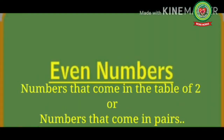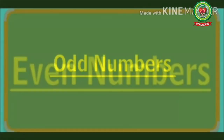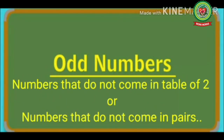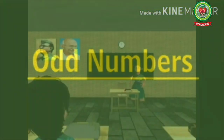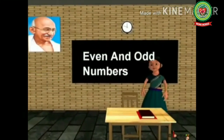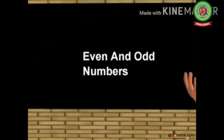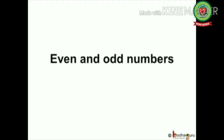Even numbers are those numbers that come in the table of two, or the numbers that come in pairs. Odd numbers are the numbers that do not come in the table of two, or the numbers that do not come in pairs. Now we are going to start with the concept of even and odd numbers.